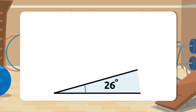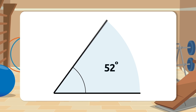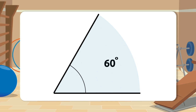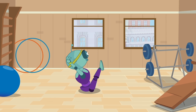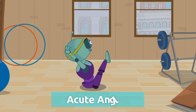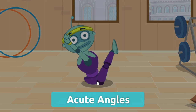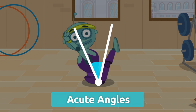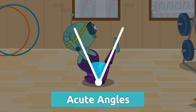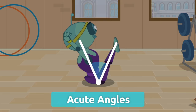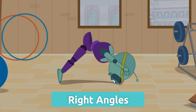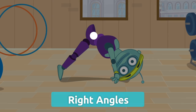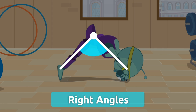Depending on the angle opening we classify angles. Acute angles are those angles that measure less than 90 degrees. Right angles are those angles that measure exactly 90 degrees.